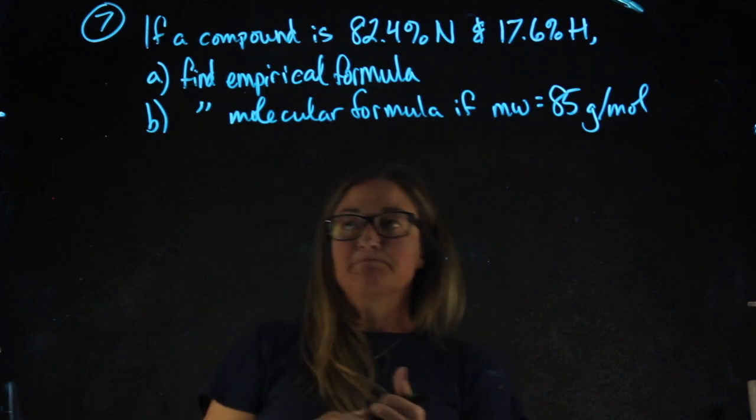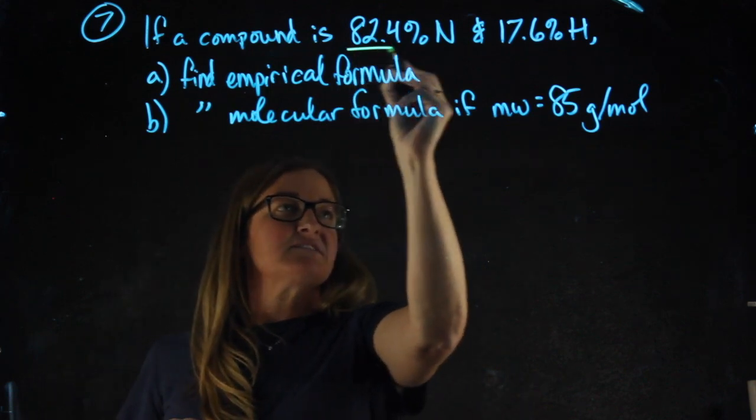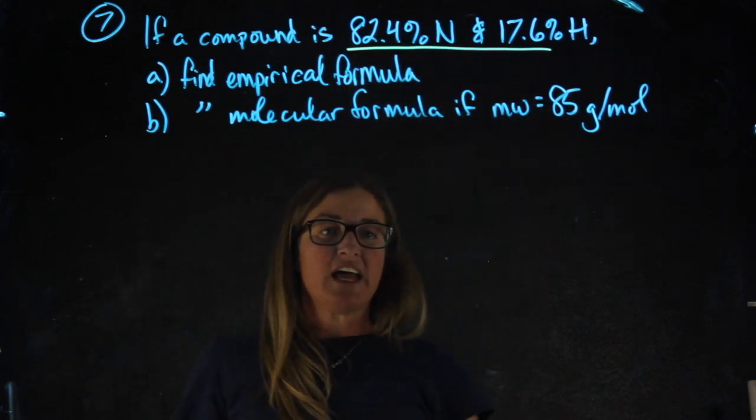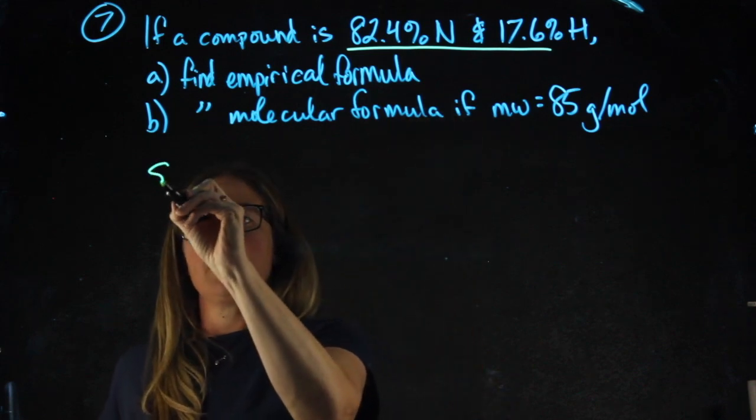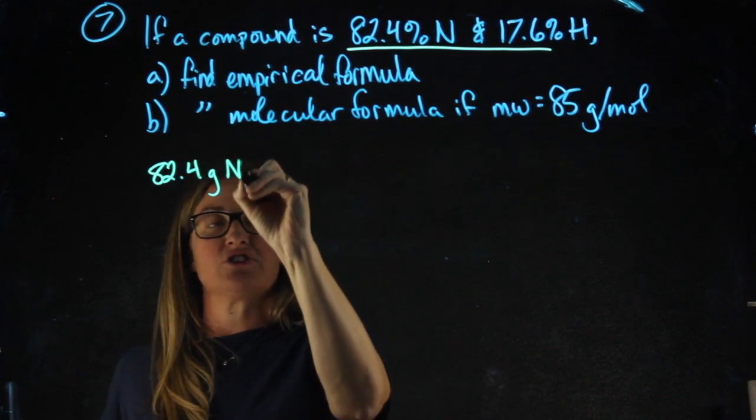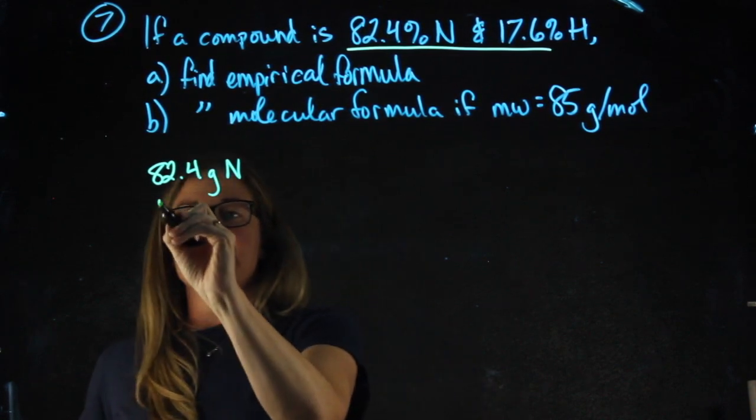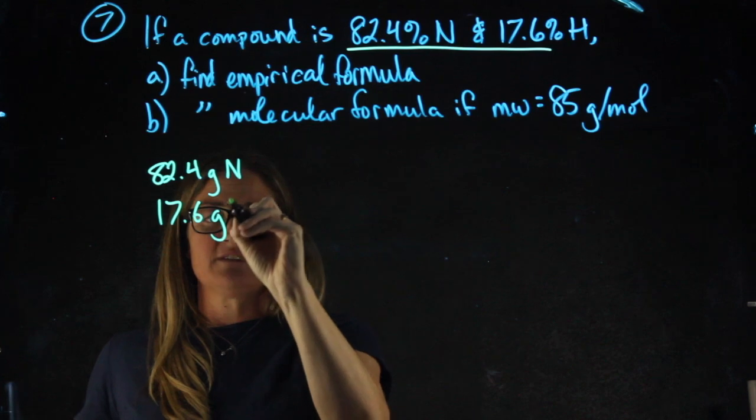So an empirical formula problem, the way I approach this using these numbers, I pretend we have 100 grams total. If we have 100 grams total, that means we have 82.4 grams of nitrogen and 17.6 grams of hydrogen.